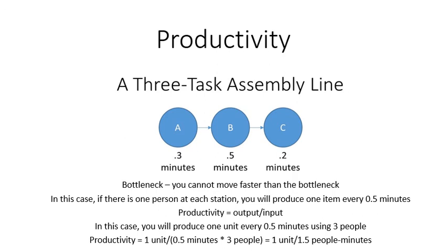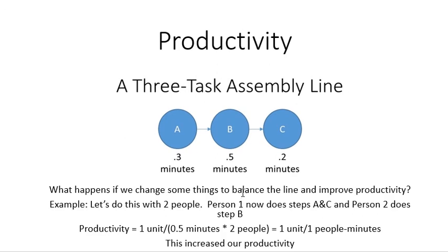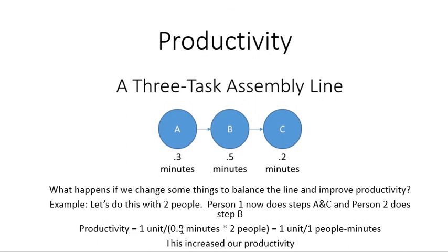We can fix and improve this. Look at this option: let's try to do it with two people. Let person 1 do step A, hand it off to person 2 who does step B, who hands it back to person 1 to do step C. Person 1 does step A and step C; person 2 does only step B. It will take person 1 0.3 minutes plus 0.5 minutes — half a minute. We've gone down to two people. We still get one unit done every 0.5 minutes, but now we're only using two people, so we get one unit per one person-minute.